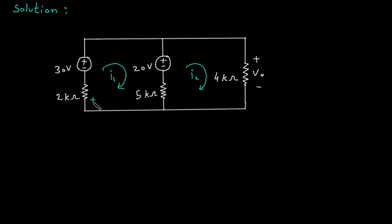Marking polarities on the components: for each resistor in mesh 1 and mesh 2, the terminal where current enters is positive and the terminal where current exits is negative.